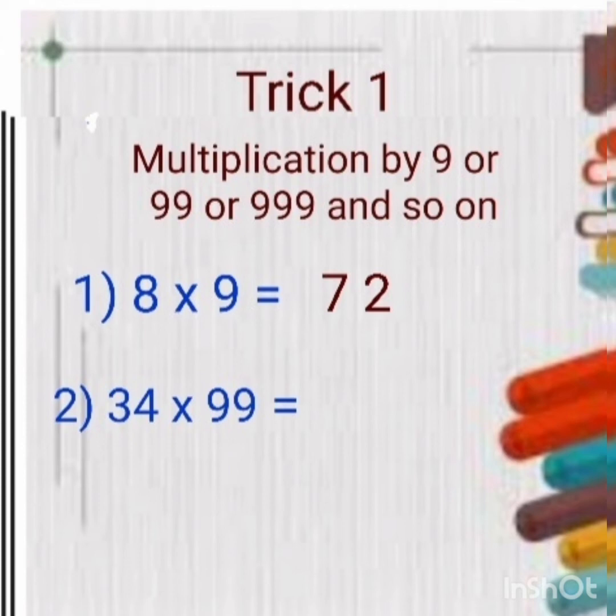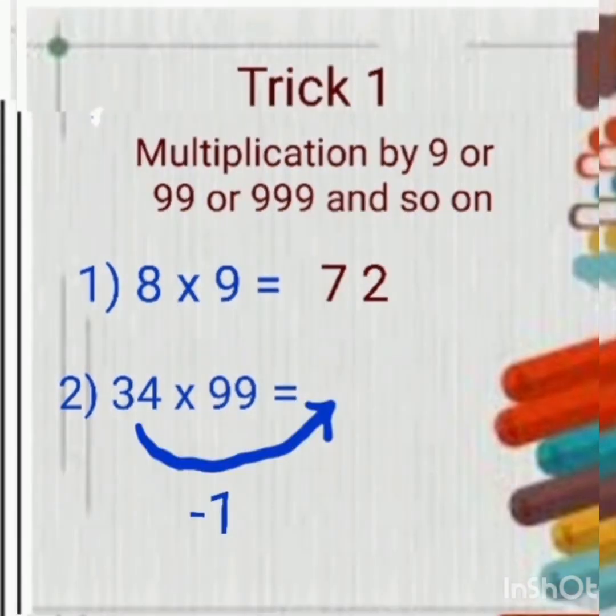Multiply any number by 99, following the same trick. That is, first you will subtract 1 from the first number. 34 minus 1 gives you 33.